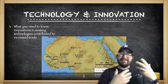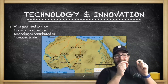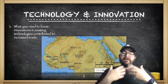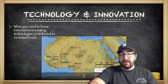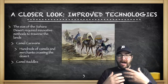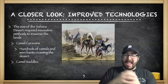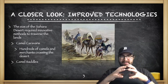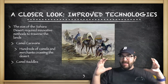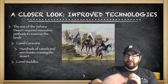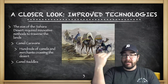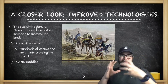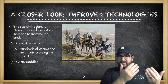With regard to technology and innovation, innovations in existing technologies that had long been used are going to contribute to increased trade along this route. For example, the use of camel caravans and camel saddles to move goods across the Trans-Saharan. The Trans-Saharan Desert is massive and required innovations like these in order to traverse. North African merchants employed these camel caravans of sometimes hundreds, if not over a thousand camels moving across the desert.